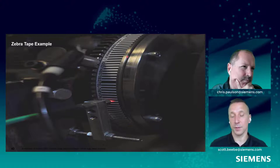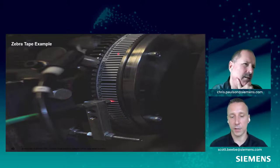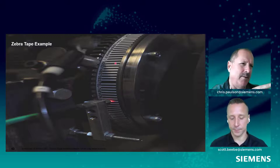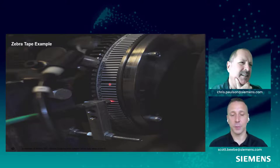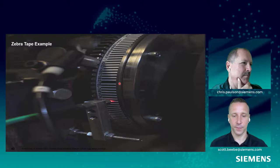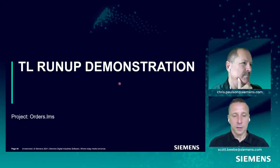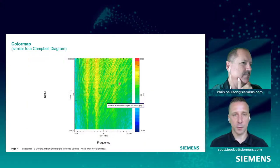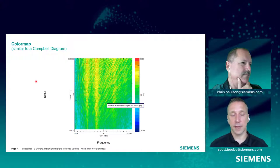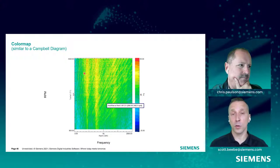We define how many pulses per revolution there are, and as it counts those voltage pulses, it knows how many rotations we have. But why is one segment of the tape wider — that one black segment? We'll talk about that when we get into the encoder tips portion of this presentation. Usually when we take data using this tachometer, we get something called a color map.